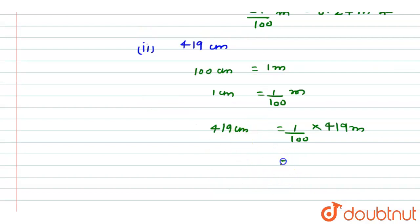So from here, 419 by 100 m is equal to 4.19 m. This is the answer for our second question.